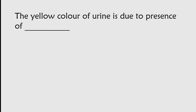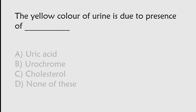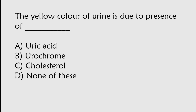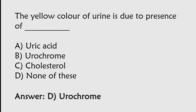The yellow color of urine is due to the presence of: Uric acid, Urochrome, Cholesterol, None of these. The correct answer is Option B. The yellow color of urine is due to the presence of urochrome.